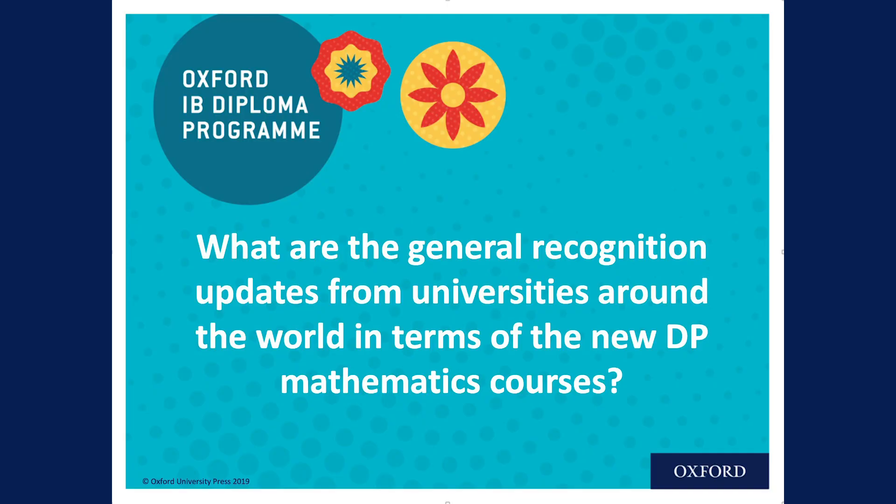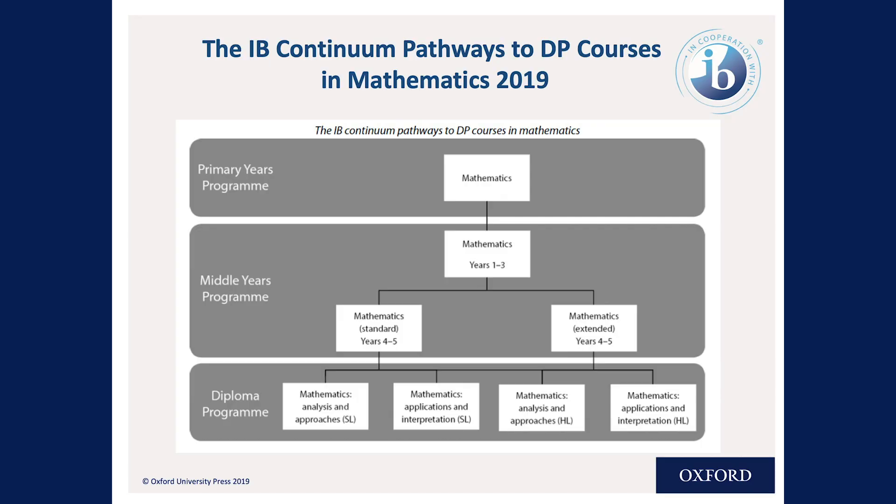So what is today's frequently asked question? What are the general recognition updates from universities around the world in terms of the new diploma mathematics courses? There are four new courses going to be offered for first teaching in 2019: Analysis and Approaches at SL and HL, and Applications and Interpretations at SL and HL.